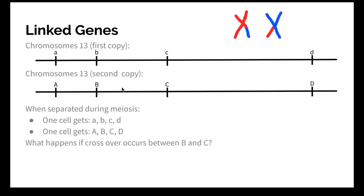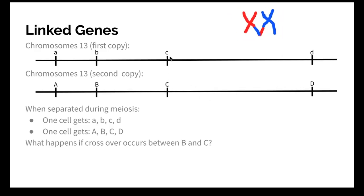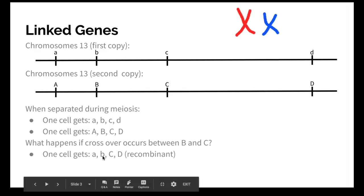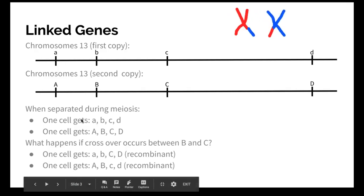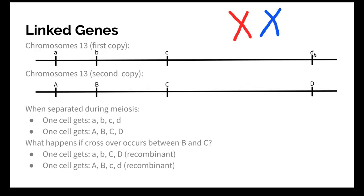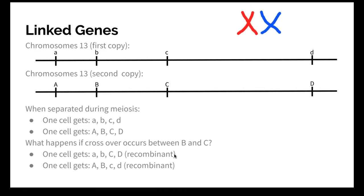But remember that crossing over normally happens. So if crossing over happened right here, so that this side of the chromosome went over here and this side went over here, you would end up with one cell getting little a, little b, big C, and capital D. The other cell would get big A and big B but the lowercase c and lowercase d. We call those recombinant chromosomes because they're now different than they used to look.